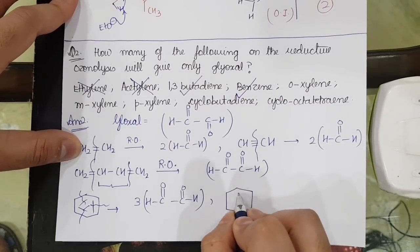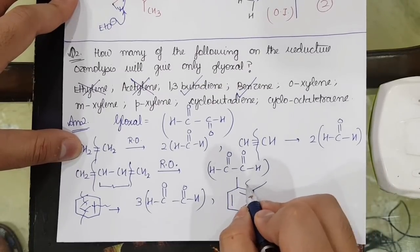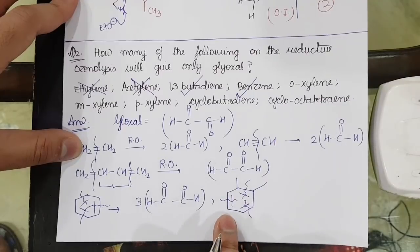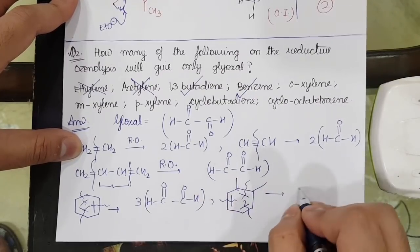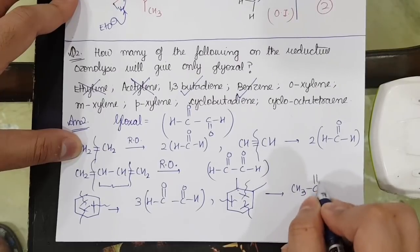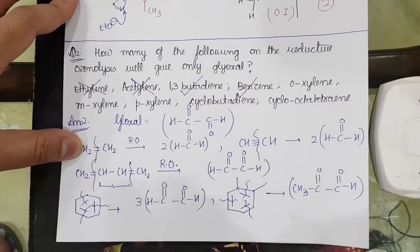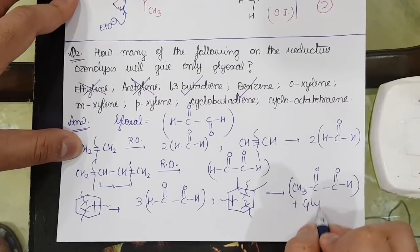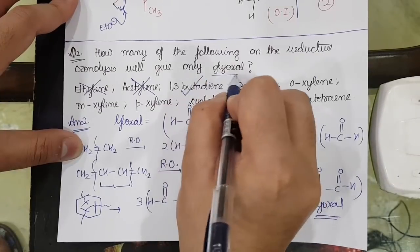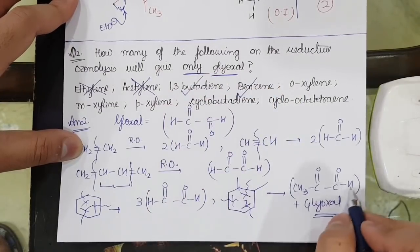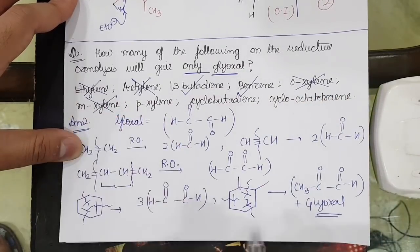If I take ortho-xylene, then I will get this structure. In the case of ortho-xylene, glyoxal is forming from here, but I can also get the formation of CH3-C double bond O, C double bond OH. This can also form, and glyoxal can also get formed. But since in the question it is asked 'will only give glyoxal,' 'only' is written, this is forming, hence ortho-xylene would not be considered.